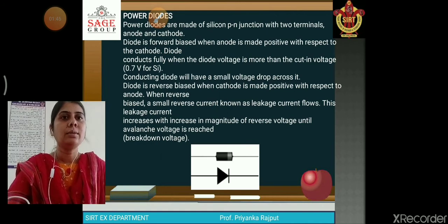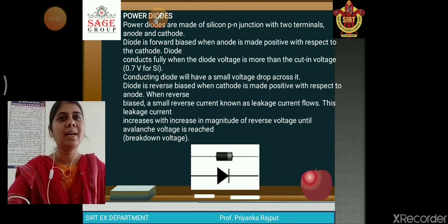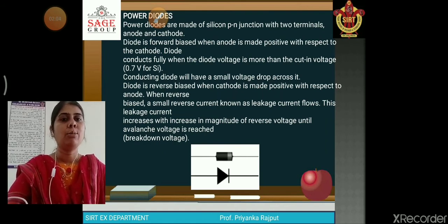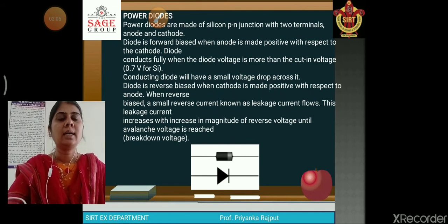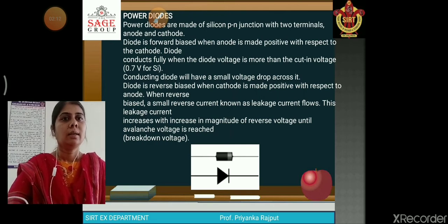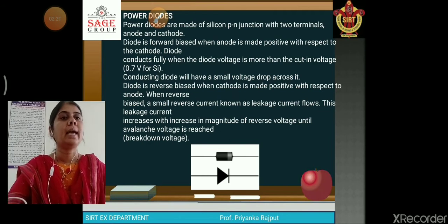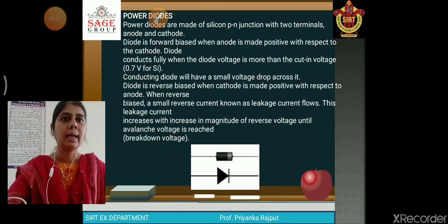Power diodes are made of silicon P-N junction with two terminals, anode and cathode. The diode is forward biased when the anode is made positive with respect to the cathode. It conducts fully when the diode voltage exceeds the cutoff voltage, i.e., 0.7 volt for silicon. A conducting diode will have a small voltage drop across it. The diode is reverse biased when the cathode is made positive and anode is made negative.